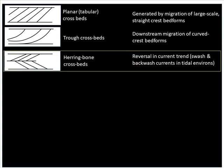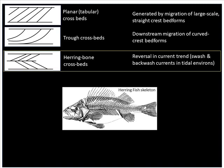Another representation is in the form of herringbone crossbeds. Herringbone is the name of a fish, and the term stems from the shape of the bone — it shows lines dipping in opposite directions, above and below a central line. Herringbone crossbeds generally form in tidal environments and indicate reversal in current direction.